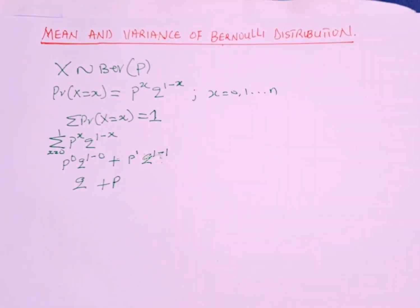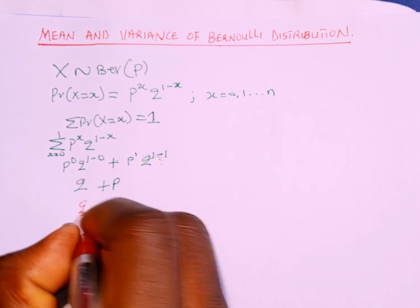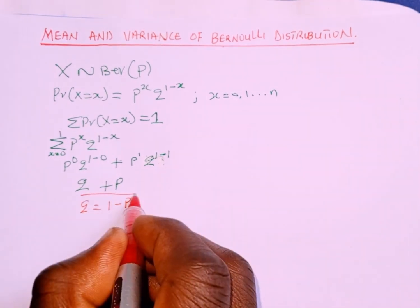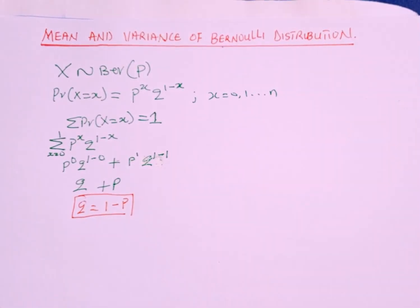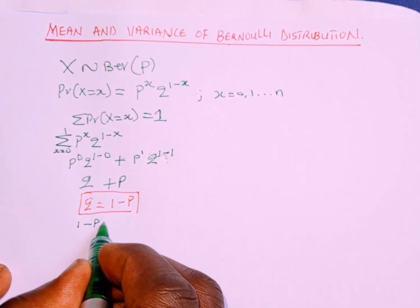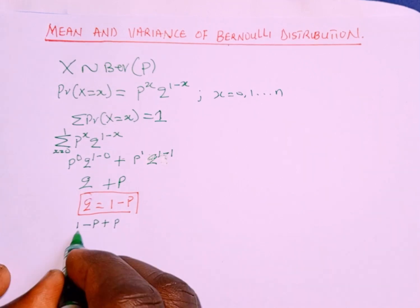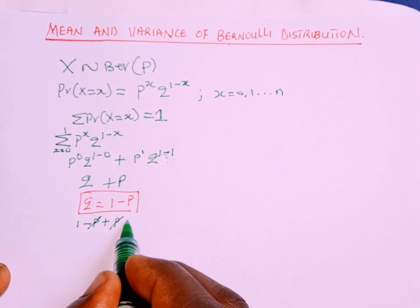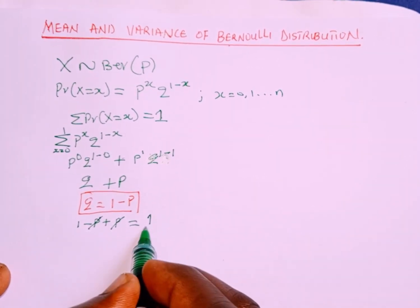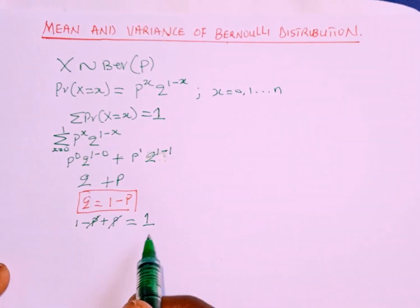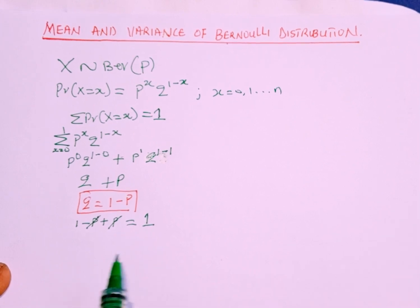Recall that q, the probability of failure, is the same as 1 minus p. So in place of q we substitute 1 minus p, giving us 1 minus p plus p. The negative p and positive p cancel, leaving us with 1. Therefore, the summation of p^x · q^(1−x) equals 1. We have shown that the sum of the probabilities equals 1.